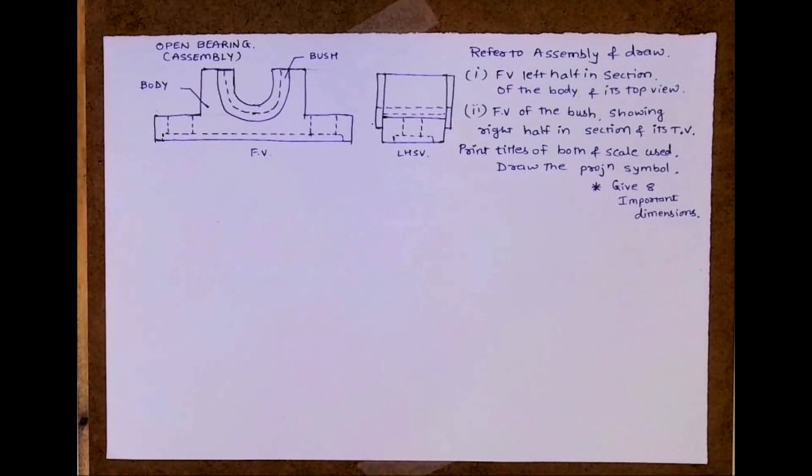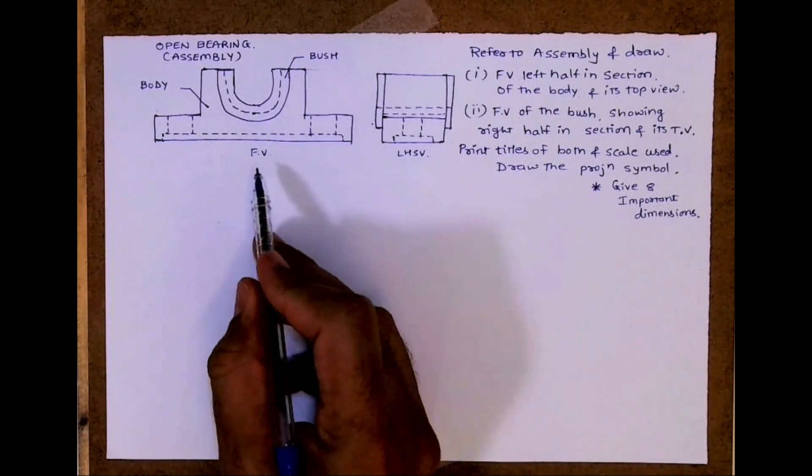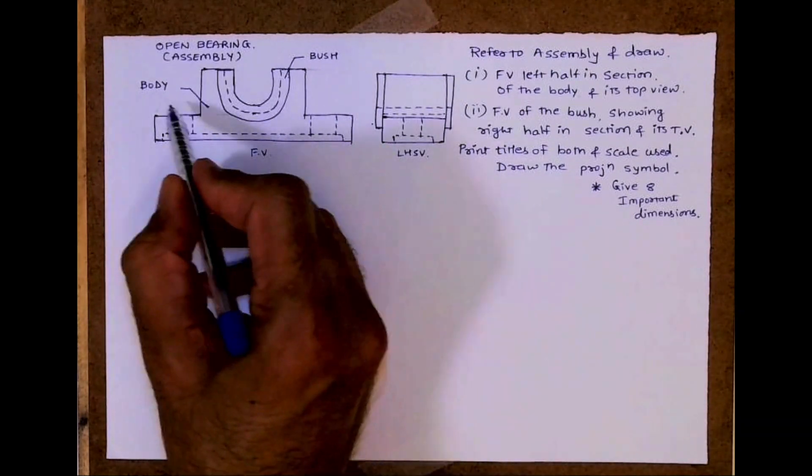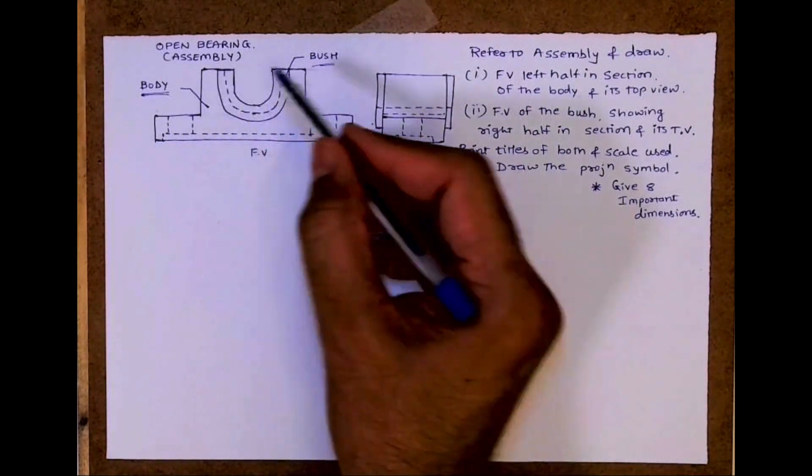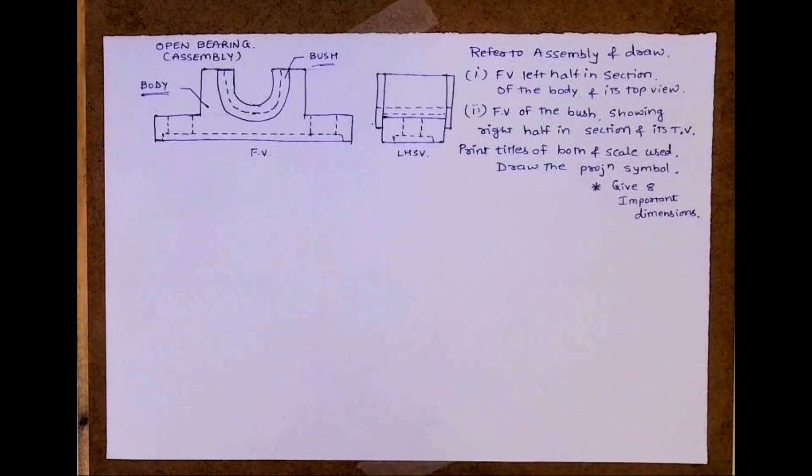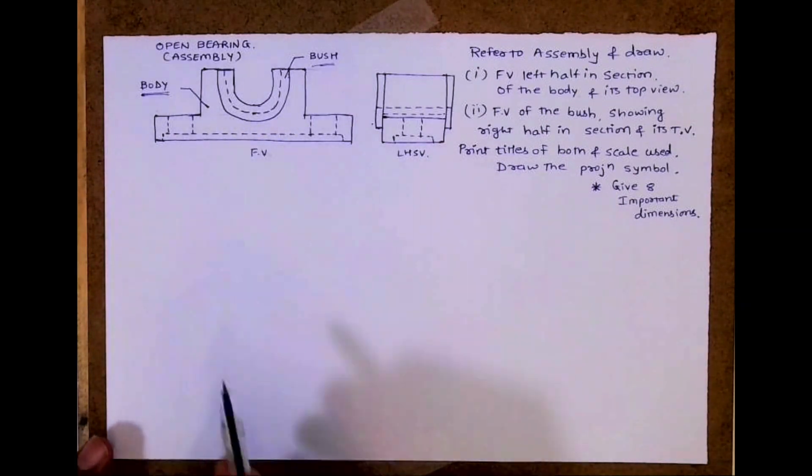And then we have to draw front view of the bush showing right half in section. See this front view and left hand side view. This is body. This is bush. Right. So then we need to draw print title and all those remaining things. So we'll start.